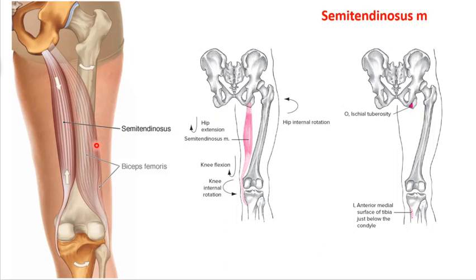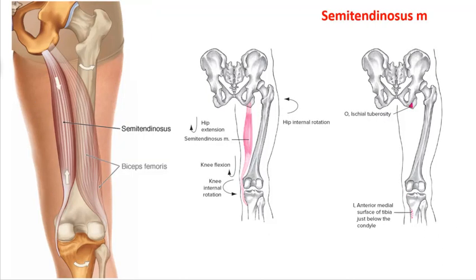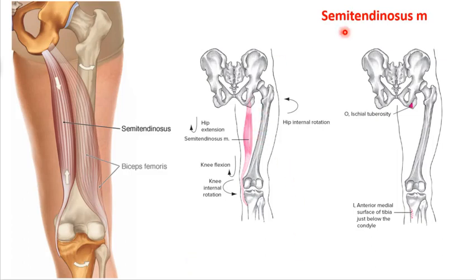The semitendinosus has a really long tendon that goes posteriorly, then wraps around the front of the leg and attaches where the gracilis and sartorius attach at the pes anserine. The semimembranosis is a bigger, flatter muscle — like a membrane — that lays as the foundation with semitendinosus on top. They have near-identical function, with attachment sites slightly medial versus lateral. They do knee internal rotation, whereas the biceps femoris does knee external rotation.